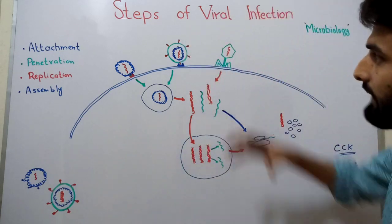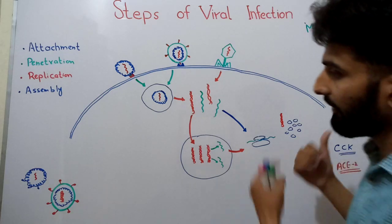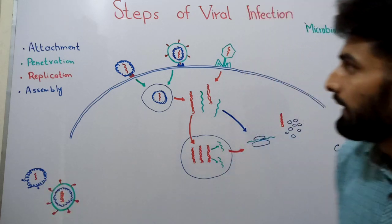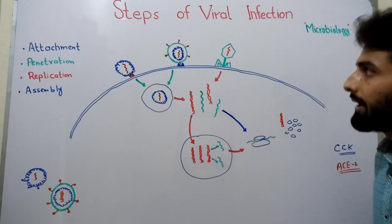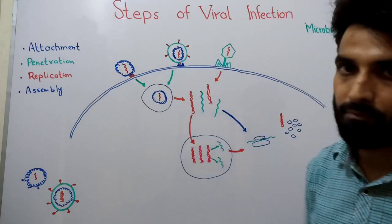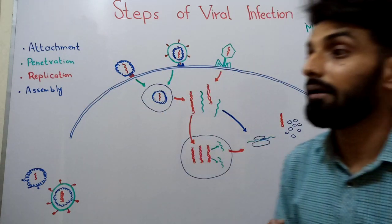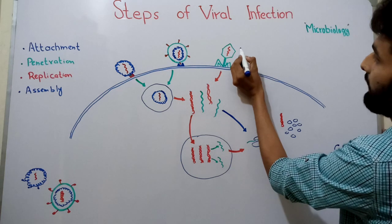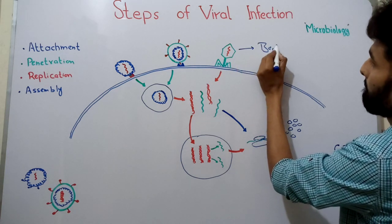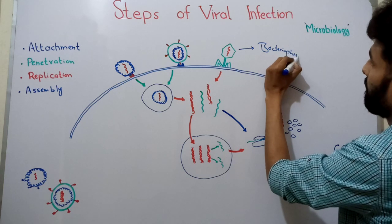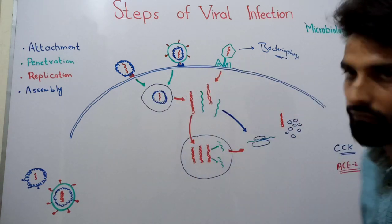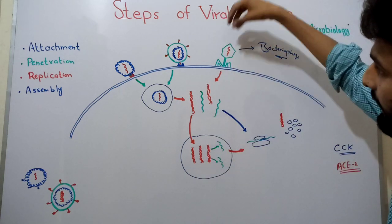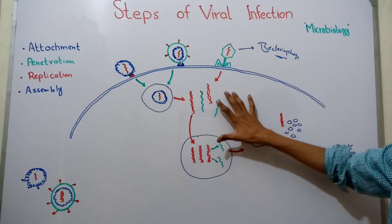Once the virus attaches to the host cell via receptors on the host cell and the proteins on its envelope or capsid, the second step begins: penetration. Penetration varies by virus type. In the case of bacteriophage — viruses of bacteria — the bacteriophage does not fully enter the bacterial cell; it only injects its DNA or genome into the cell, leaving the capsid outside.